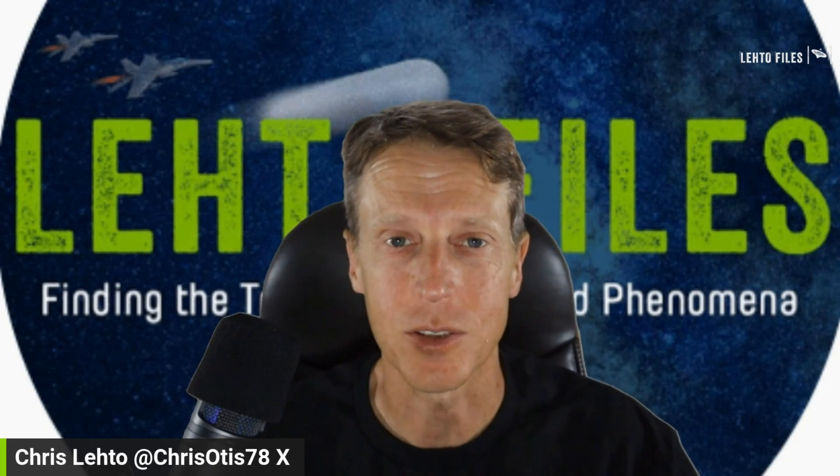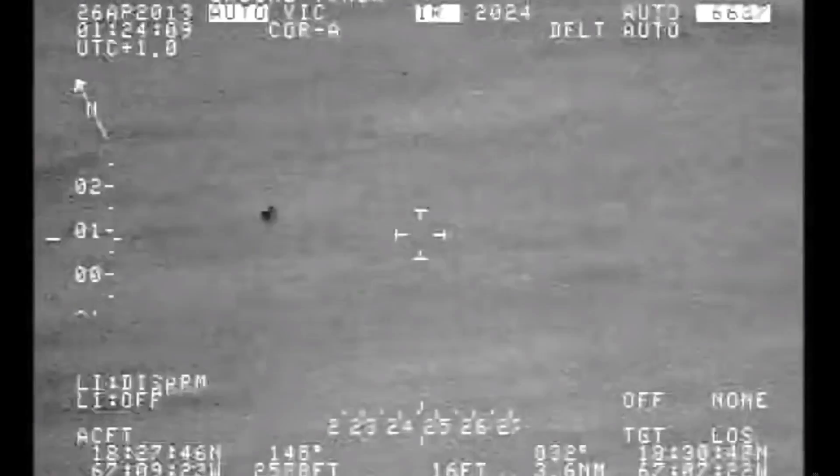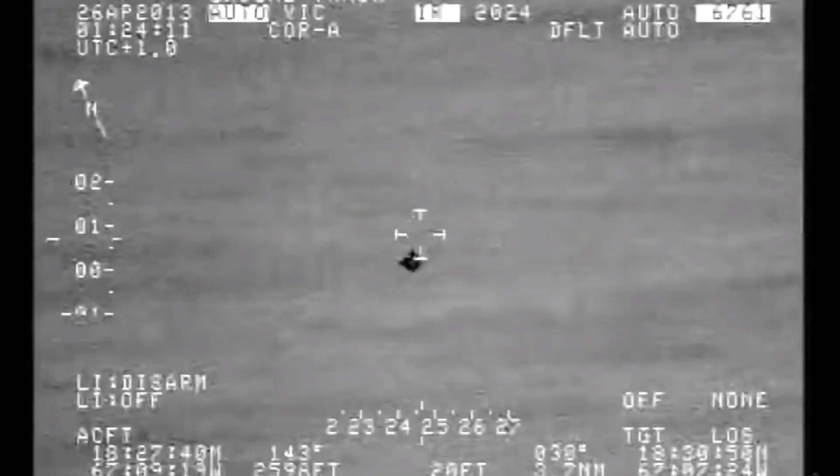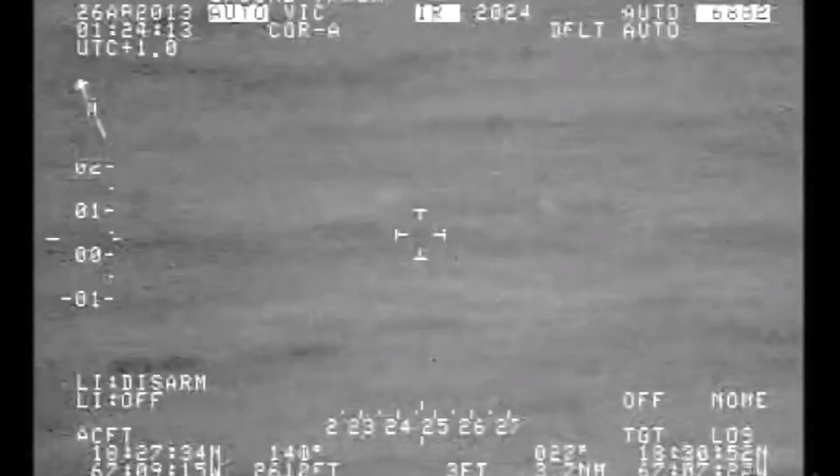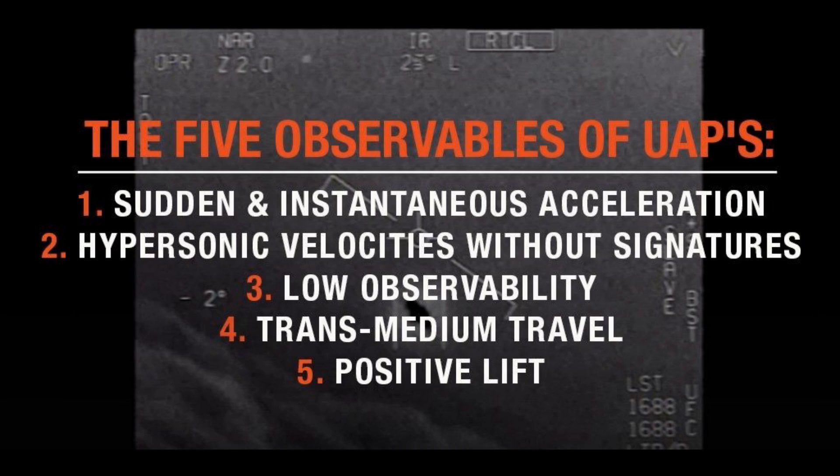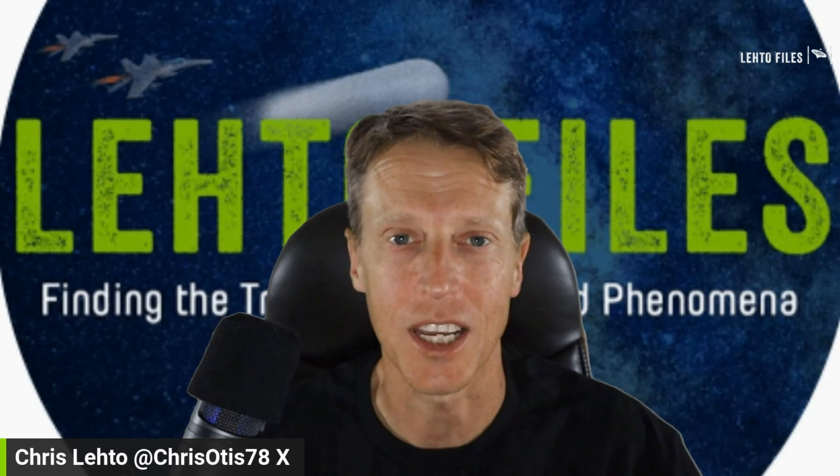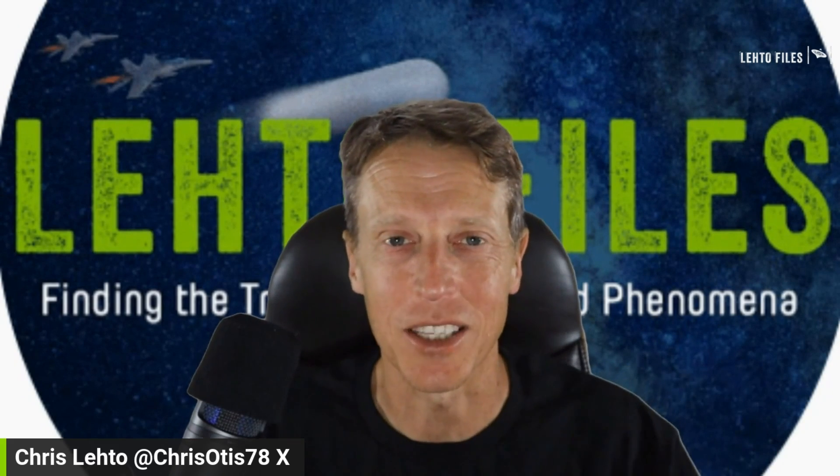If true, this will be a huge breakthrough. It could be what actually the UAPs are using, because one of the five observables is acceleration without any sort of signatures. So basically no visual means of thrust. We don't see anything coming out the back of anything.